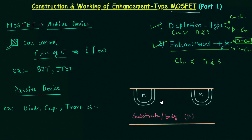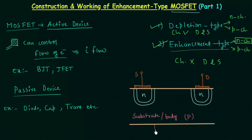Let's say this N well is acting as source and this N well is acting as drain. Like JFET, we have metal contacts in case of MOSFET also. This terminal is the source terminal and this terminal is the drain terminal. The substrate or body also has a metal contact, and this terminal we represent as SS or B, where B stands for body and SS stands for substrate.